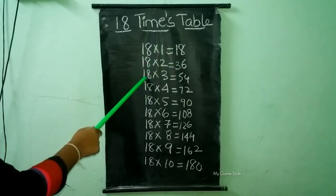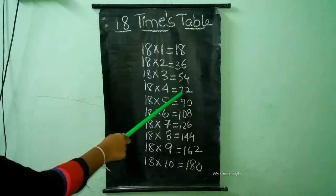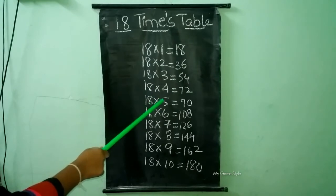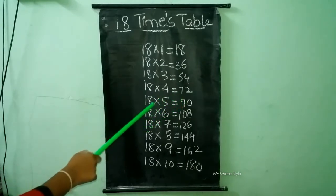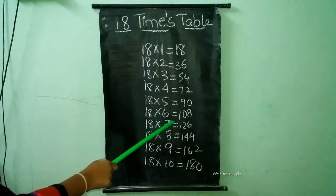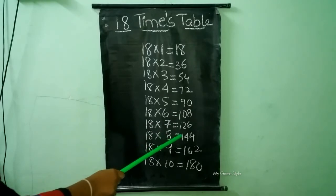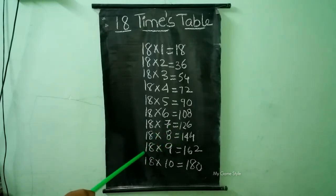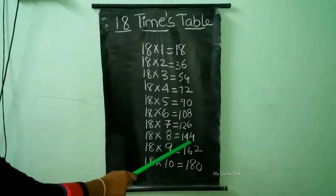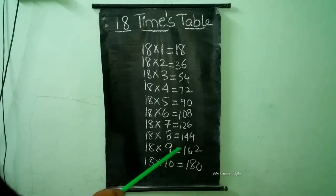18 times table. 18 times 1 is equal to 18. 18 times 2 is equal to 36. 18 times 3 is equal to 54. 18 times 4 is equal to 72. 18 times 5 is equal to 90. 18 times 6 is equal to 108. 18 times 7 is equal to 126. 18 times 8 is equal to 144. 18 times 9 is equal to 162. 18 times 10 is equal to 180.